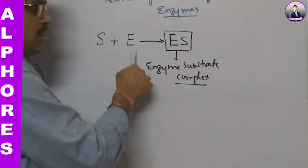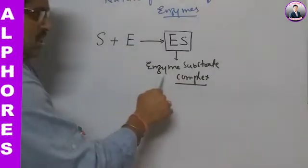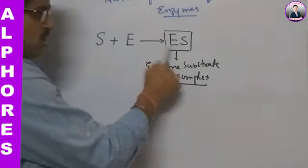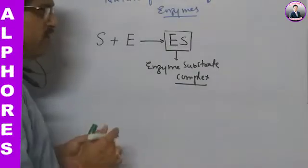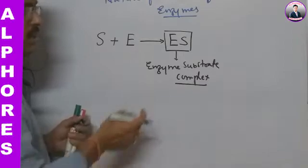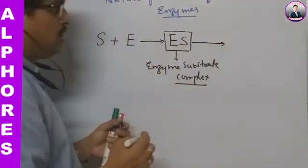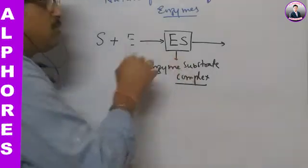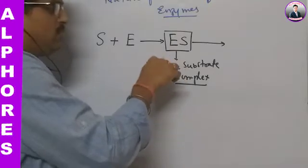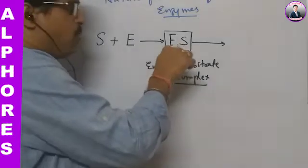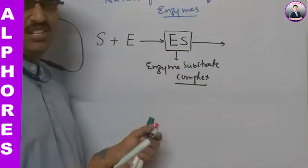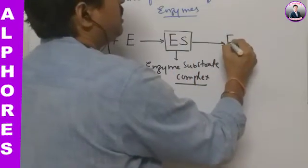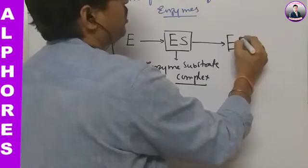Once the enzyme-substrate complex is formed, the substrate molecule is tightly bound to the enzyme's active site. At this stage, a conformational change occurs in the enzyme — it modifies and alters slightly, forming a tight complex. Then the bonds in the substrate molecules begin to break and new bonds form, and they reach the transition state.